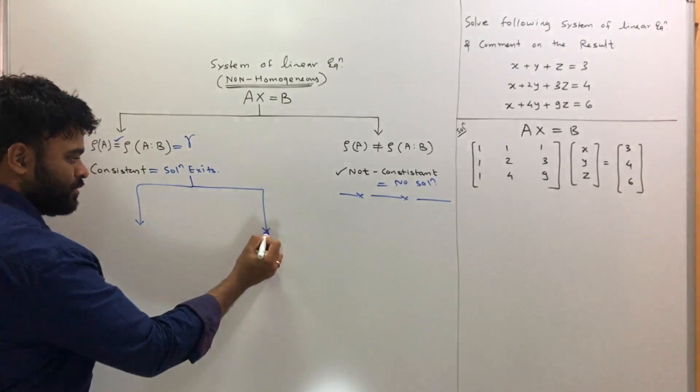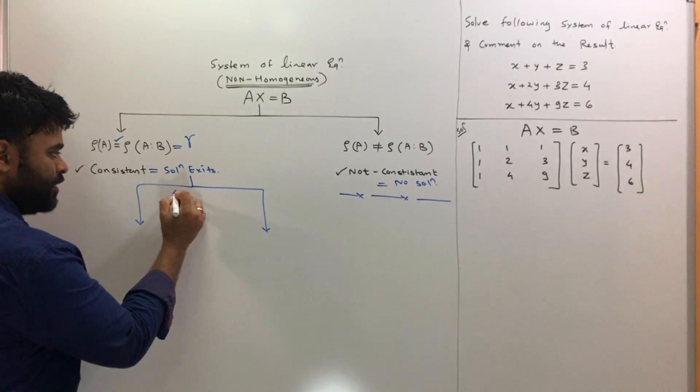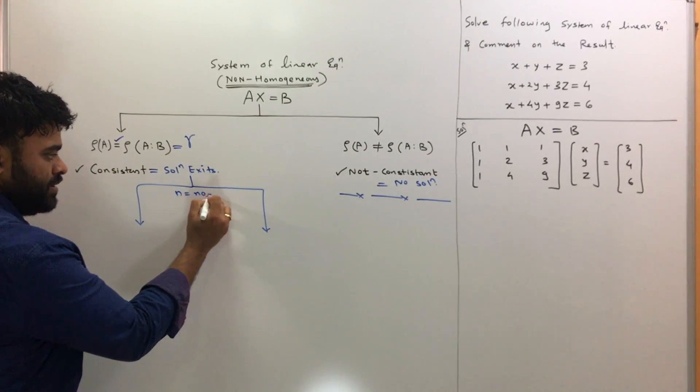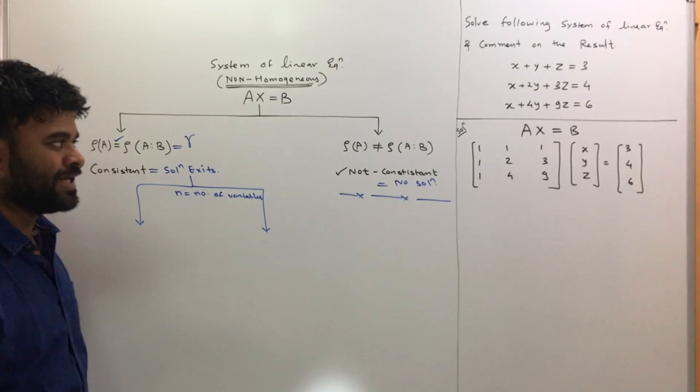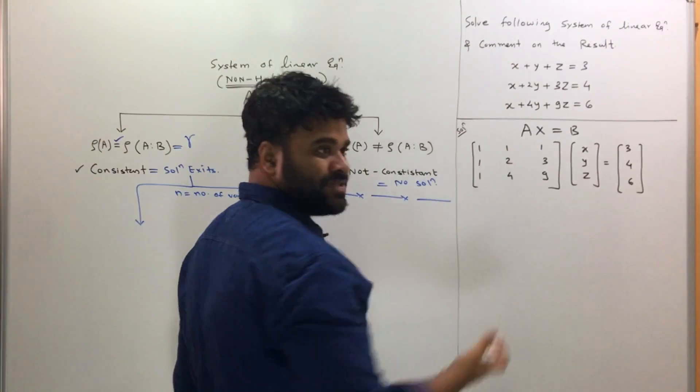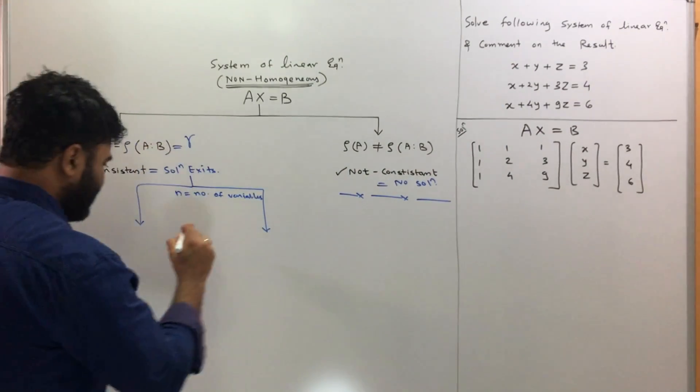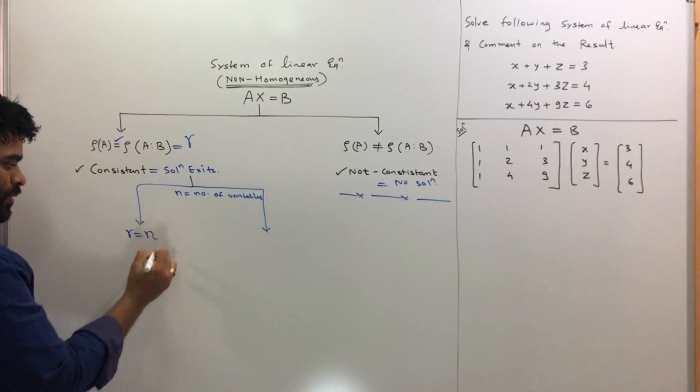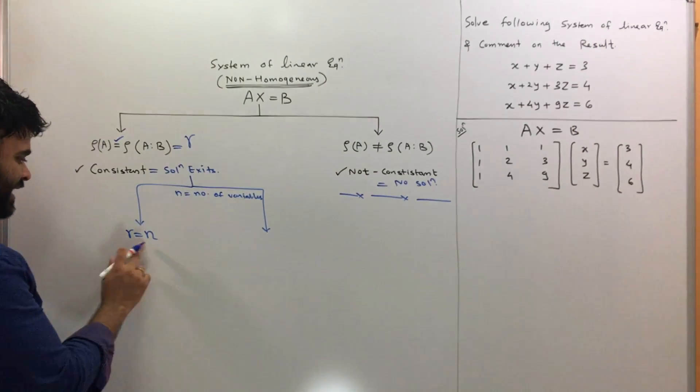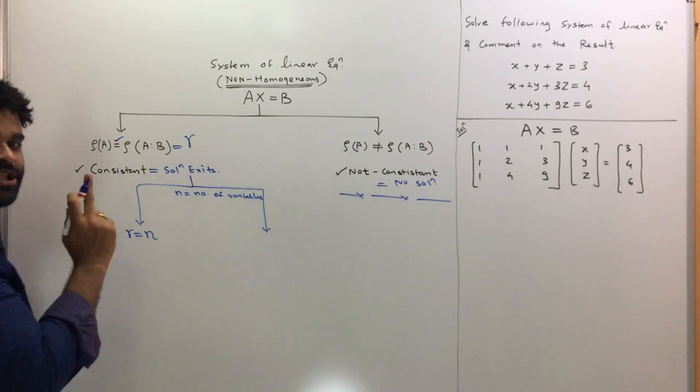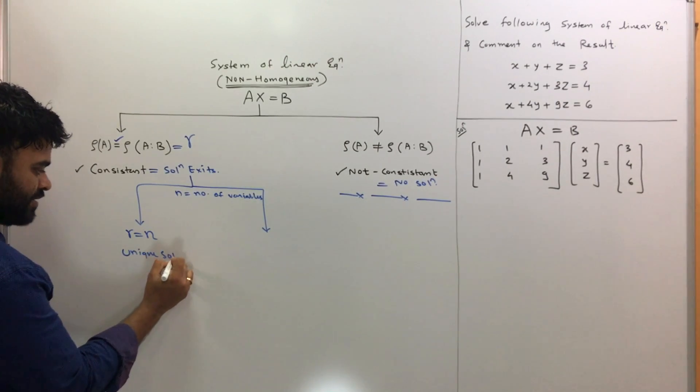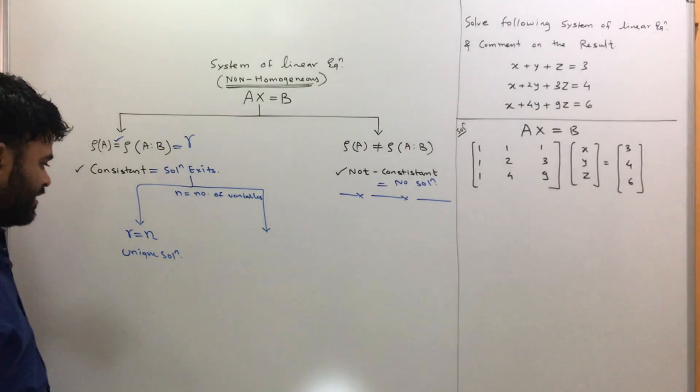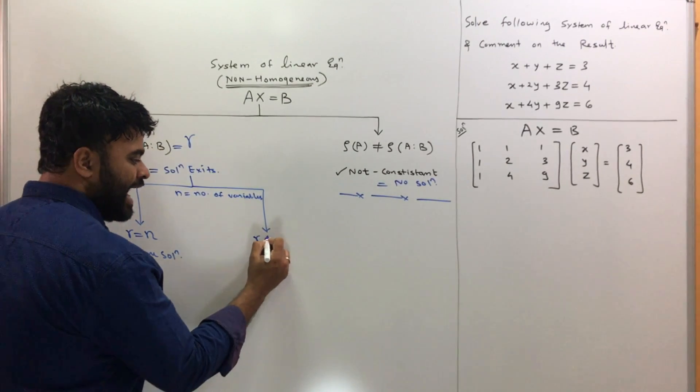In this case also, we say n is equal to the number of variables. Number of variables basically means, here you have three variables: x, y, and z. You have one solution and we call this a unique solution when this happens.